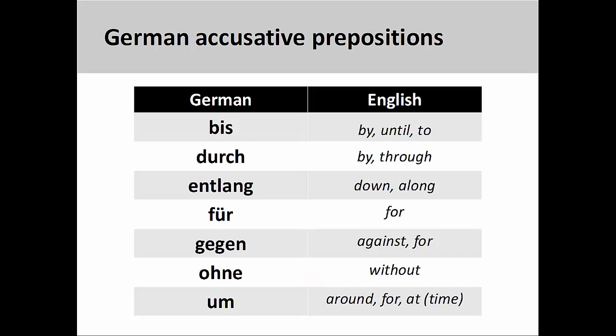There are seven accusative prepositions in German: bis (until/to), durch (through), entlang (down/along), für (for), gegen (against), ohne (without), and um (around, for, at a point in time). Some of these seem to have the same definition in English, but in actuality there are slight differences in meaning that need to be examined in greater detail. Since this examination will take a bit of time, I will do this in a later presentation.